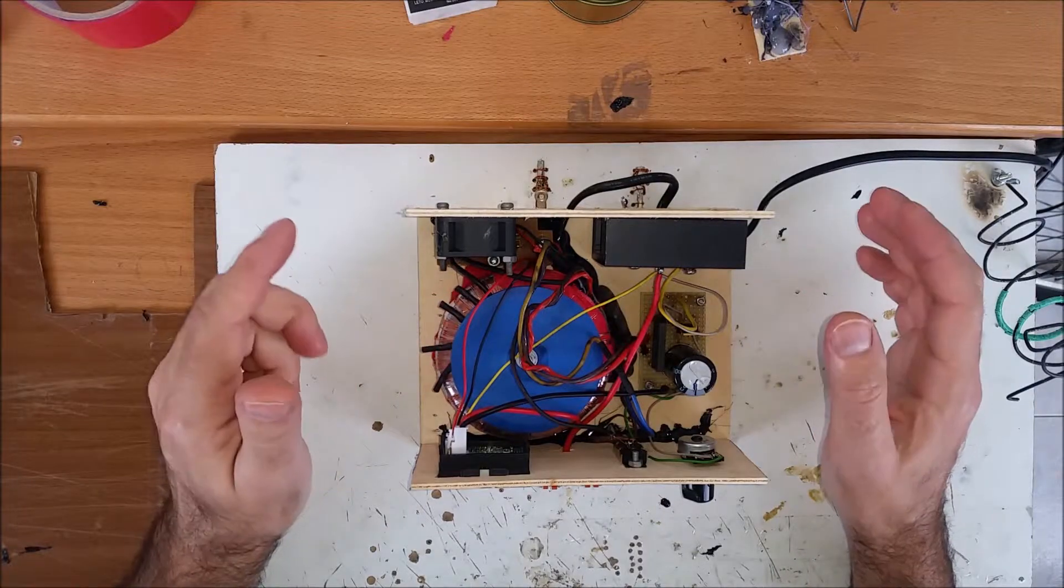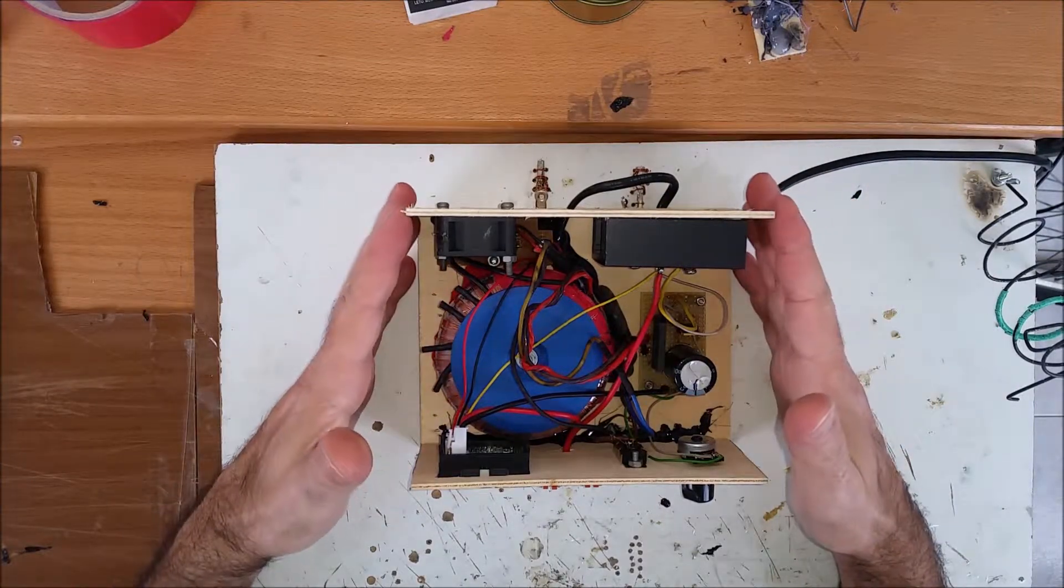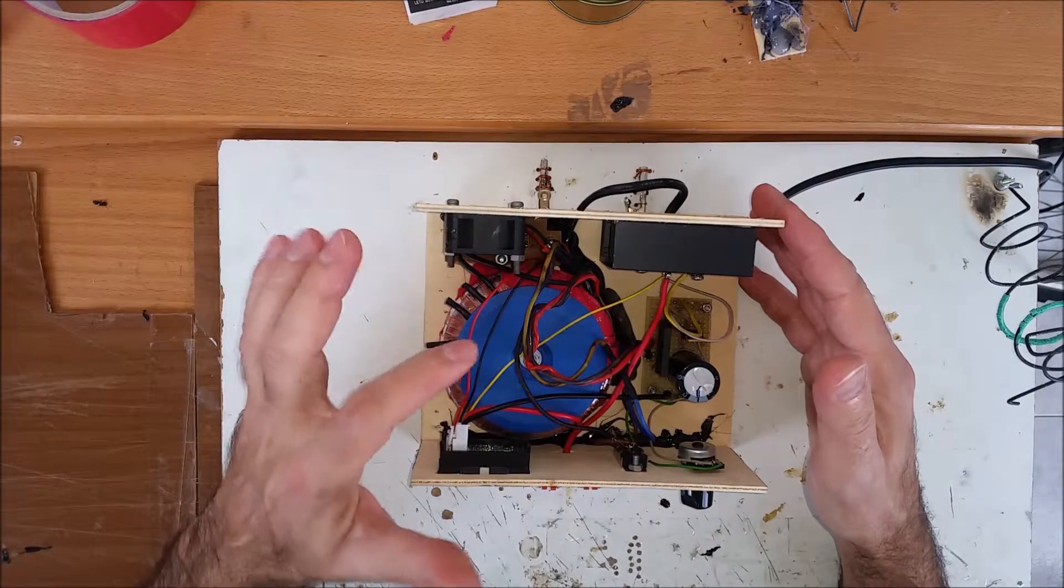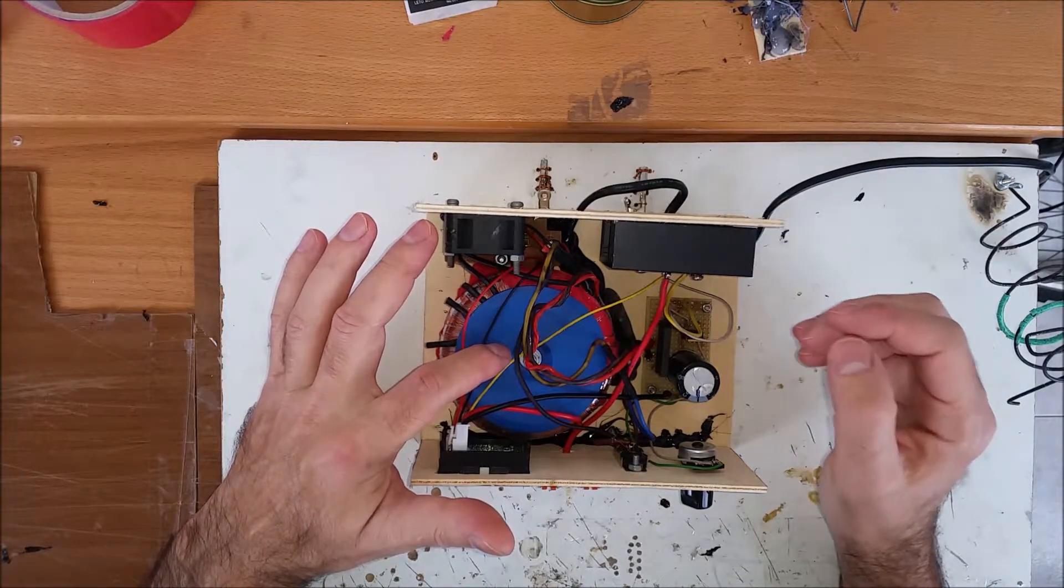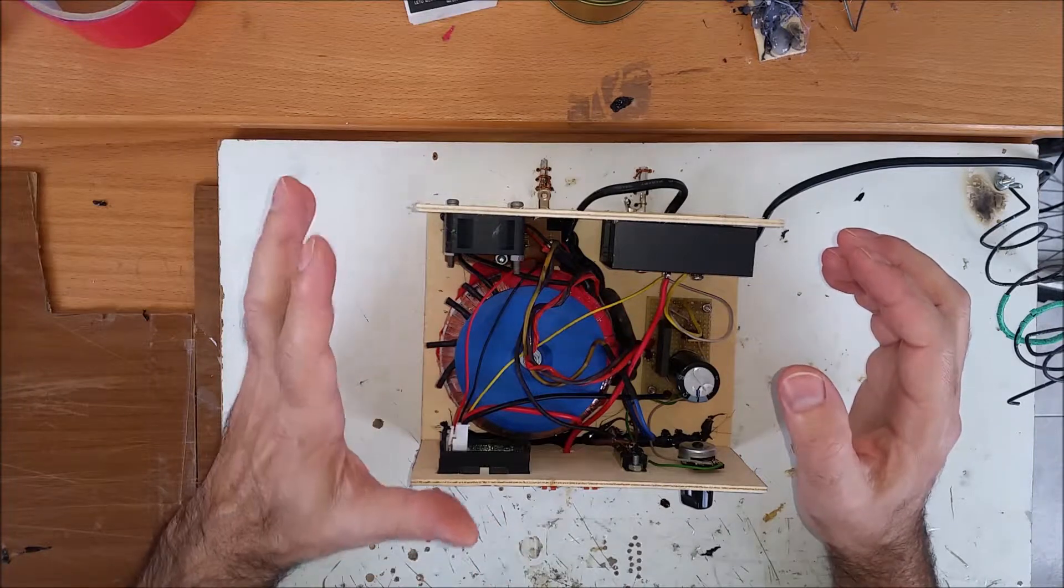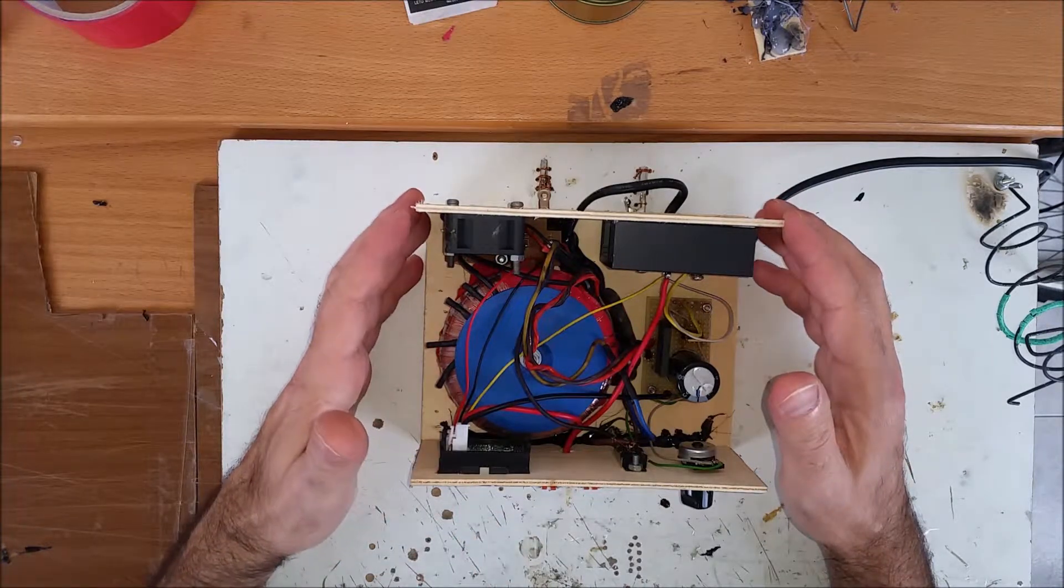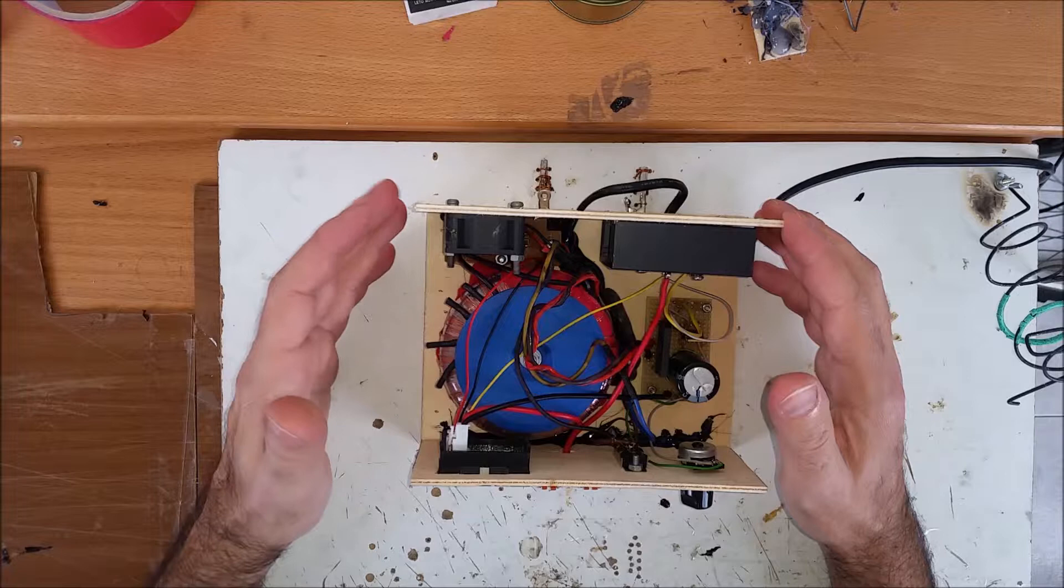The way that I worked this up was like this: I had the transformer and I have two secondaries. The transformer first secondary is 30 volts at 2.6 amps, it's rated.